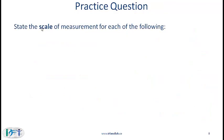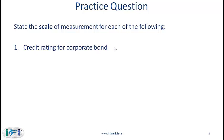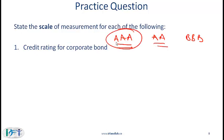Let's work through a practice question on measurement scales. The credit rating for a corporate bond: bonds have a credit rating indicating their probability of defaulting. The best credit rating is AAA, which is better than AA, and lower ratings would be BBB and so on. The order makes sense because AAA is better than AA, which is better than A, but we can't say much about the interval. So this would be an ordinal scale.